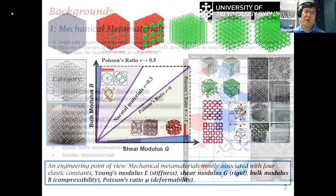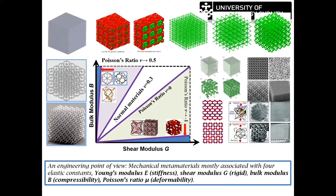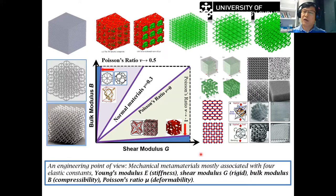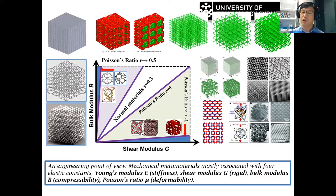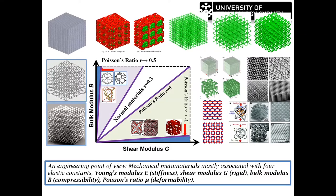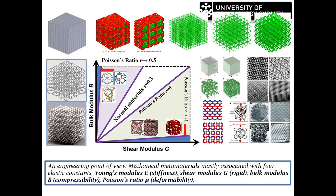All those different mechanical metamaterials, whether from my research group or other groups, are usually extraordinary. Their elastic properties are actually determined by four parameters from an engineering standpoint. Those mechanical metamaterials are mostly determined by four elastic constants: Young's modulus, shear modulus, bulk modulus, and Poisson's ratio. They are just combinations of those very important fundamental elastic constants.